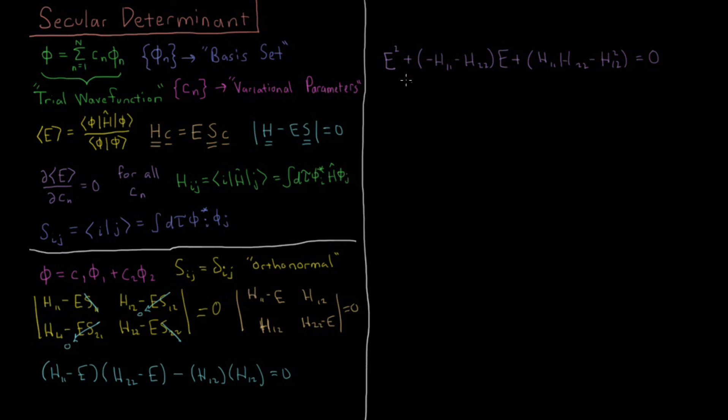So in terms of our quadratic formula, we have that a = 1, we have that b = -(H11 + H22), we have that c = H11*H22 - H12².